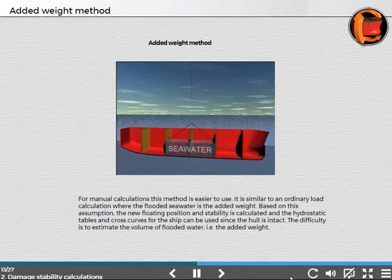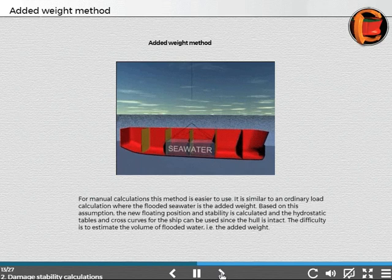In manual calculations, this method is easier to use. It is similar to an ordinary load calculation where the flooded seawater is the added weight. Based on this assumption, the new floating position and stability is calculated, and the hydrostatic tables and cross curves for the ship can be used since the hull is intact. The difficulty is to estimate the volume of flooded water, that is, the added weight.